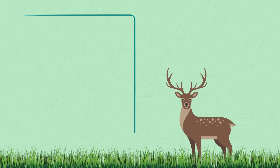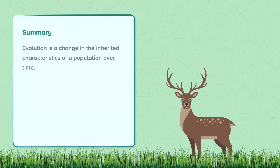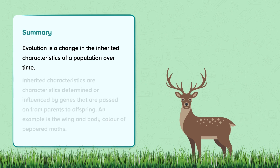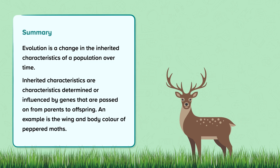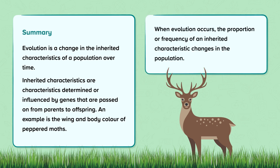Let's now summarise what we have learnt. Evolution is a change in the inherited characteristics of a population over time. Inherited characteristics are characteristics determined or influenced by genes that are passed on from parents to offspring. An example is the wing and body colour of peppered moths. When evolution occurs, the proportion or frequency of an inherited characteristic changes in the population.